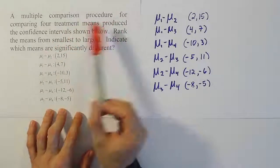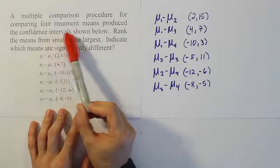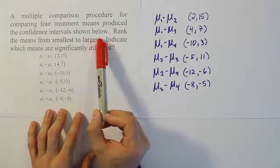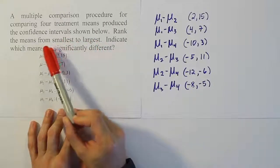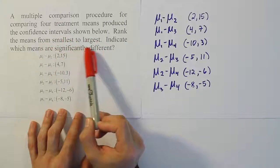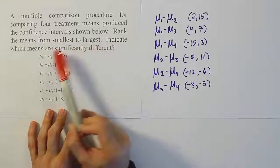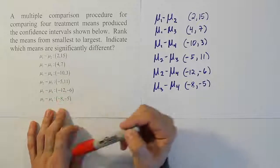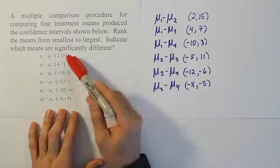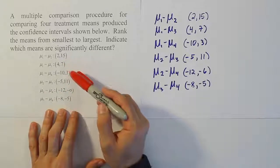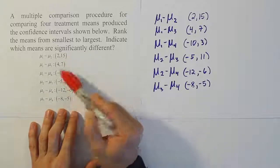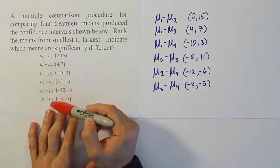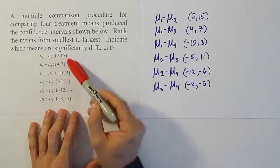A multiple comparison procedure for comparing four treatment means produces the confidence intervals shown. We need to rank the means from smallest to largest and indicate which means are significantly different. We're given these confidence intervals, and on the left-hand side we can see what comparisons were made to produce these intervals.